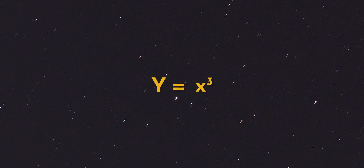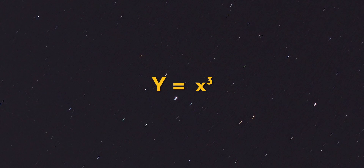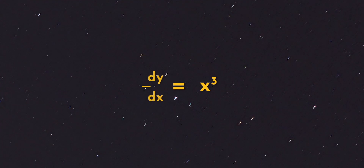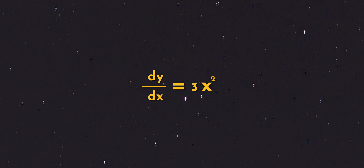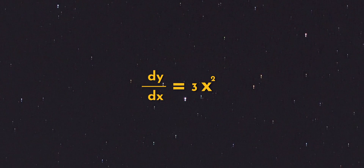If we look at differentiation, what is y equal to x cubed? If we differentiate this, that is dy/dx. If we look at 3x, then we look at 3x squared. You can see the differentiation formula.